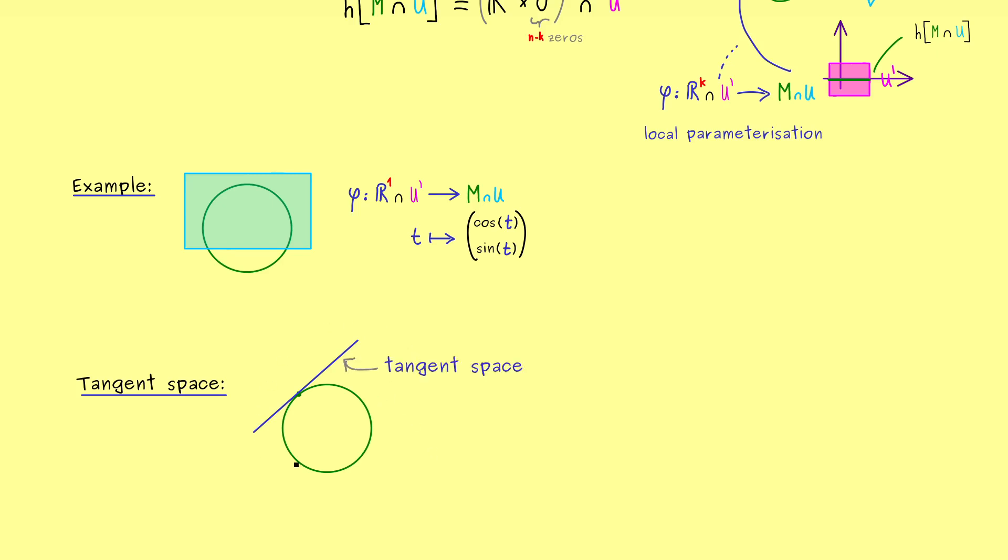So you should see, in this picture we translate the linear space to the point. This is a common thing you might already know from one-dimensional derivatives. But now of course the question is, how is this tangent space defined?